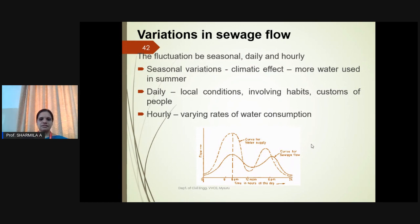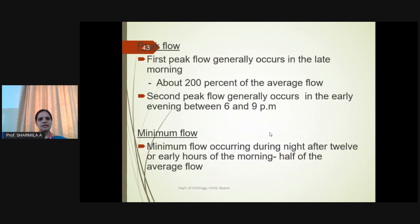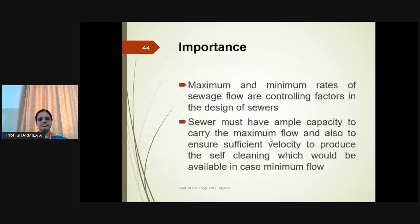Variation in sewage flow occurs on a daily basis. Fluctuation can be seasonal, daily, and hourly. Seasonal variation: due to climatic effects, more water is used in summer. Daily: local conditions involving habits and customs of the people. Hourly: varying rates of water consumption. Peak flow: the first peak generally occurs in late morning — about 200% of average flow — and the second peak in early evening between 6 to 9 PM. Minimum flow occurs during nighttime.